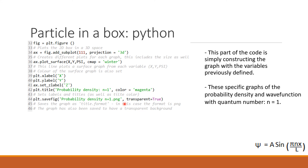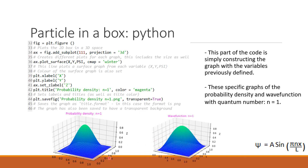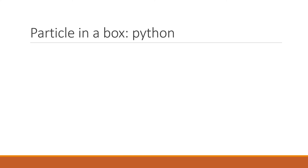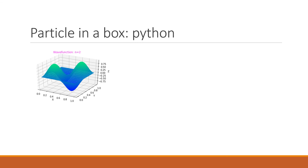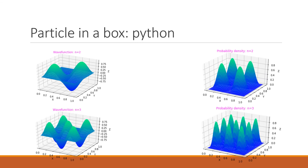One thing to note is that we can save it as a transparent graph, as you can see — they're both transparent. Here we have our wave function graph, and here is the probability density, which is simply the wave function squared. We can also have different values for n: here we can see values for n=2 and n=3, showing their probability densities and wave functions.